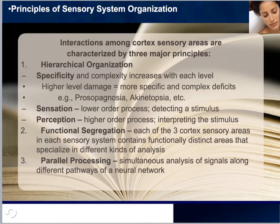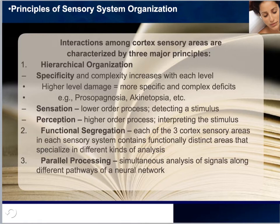The second major principle of sensory structures is functional segregation. It was once assumed that the primary, secondary, and association areas of the cortex were each functionally homogeneous — that is, all cortex at any given level of the sensory hierarchy acted together to perform the same function. Research has shown that functional segregation — meaning these areas are separated and serve distinct functions — is observed rather than functional homogeneity, where all three levels would operate the same way.